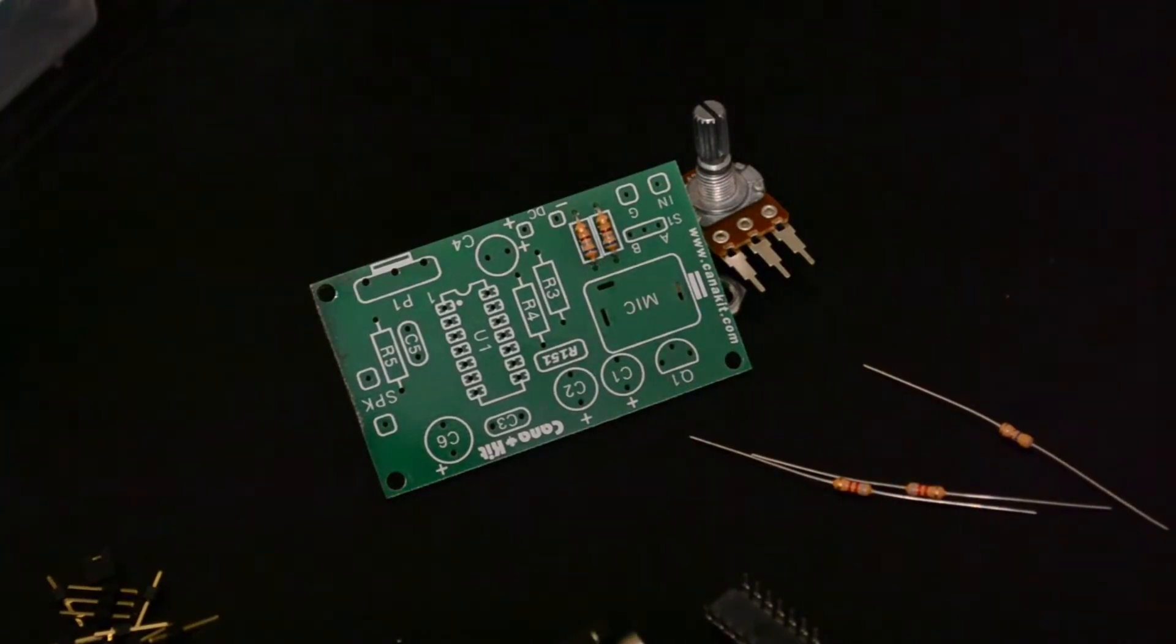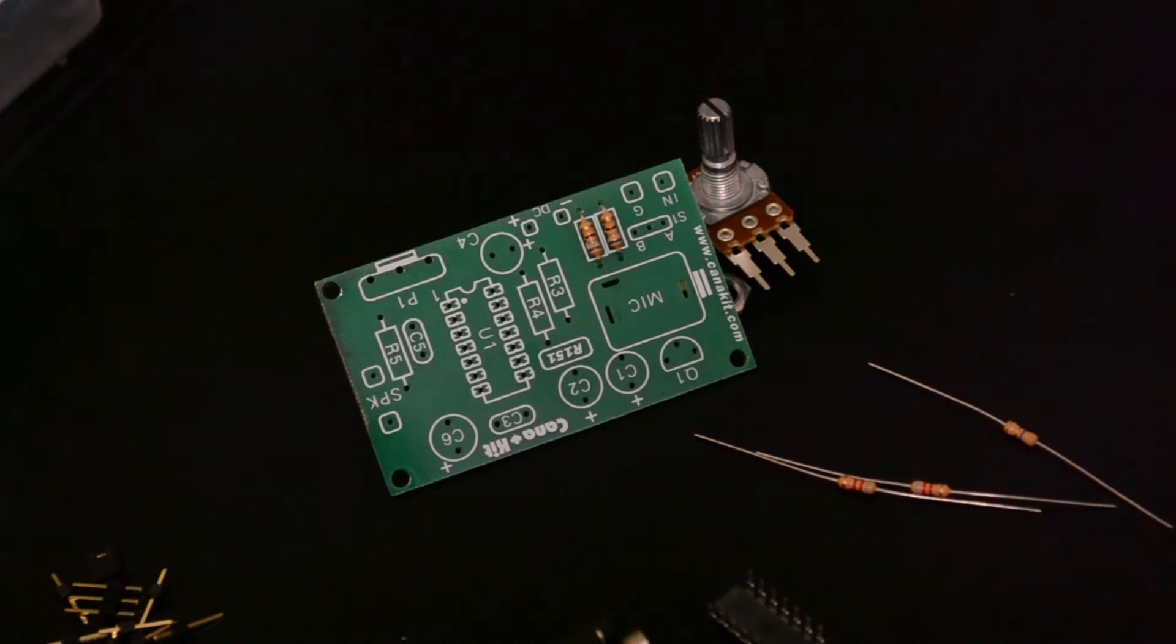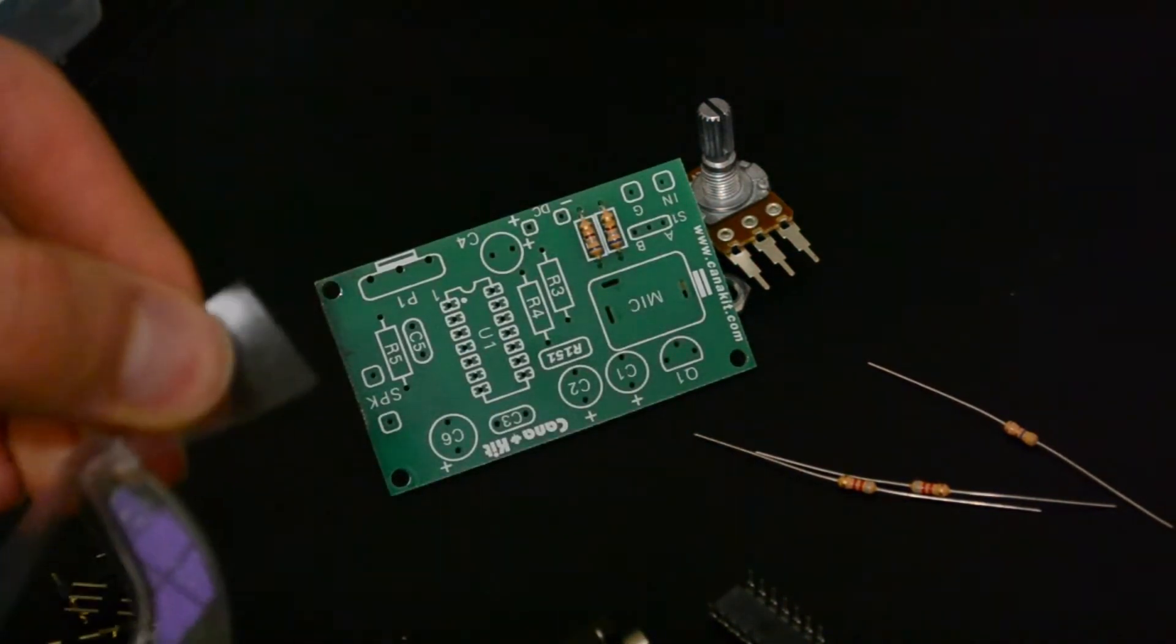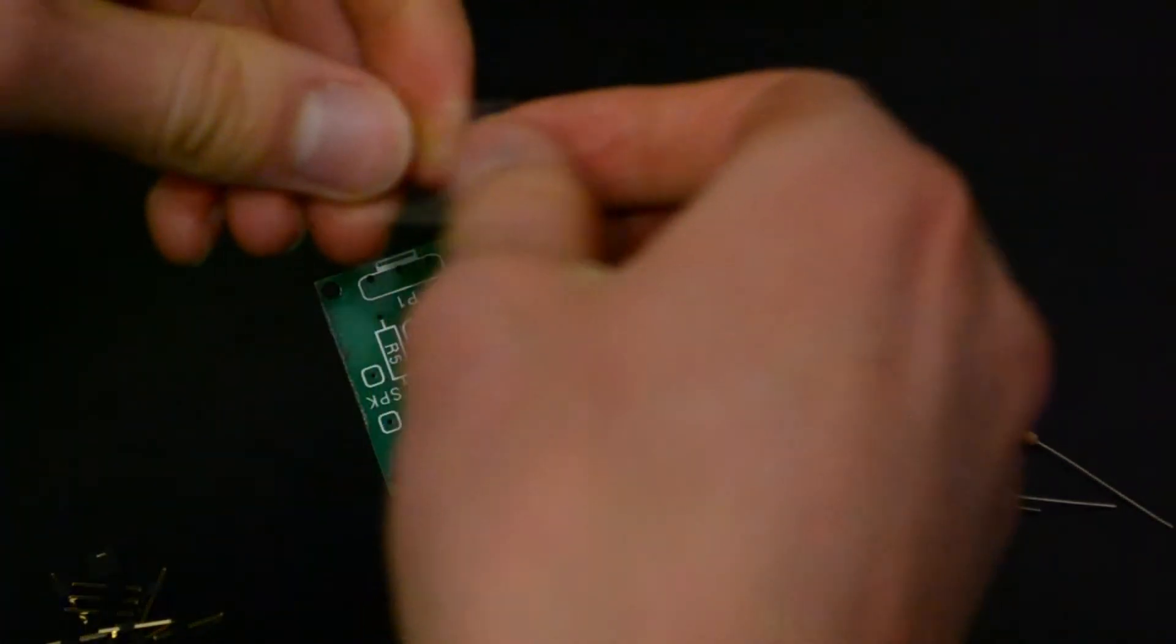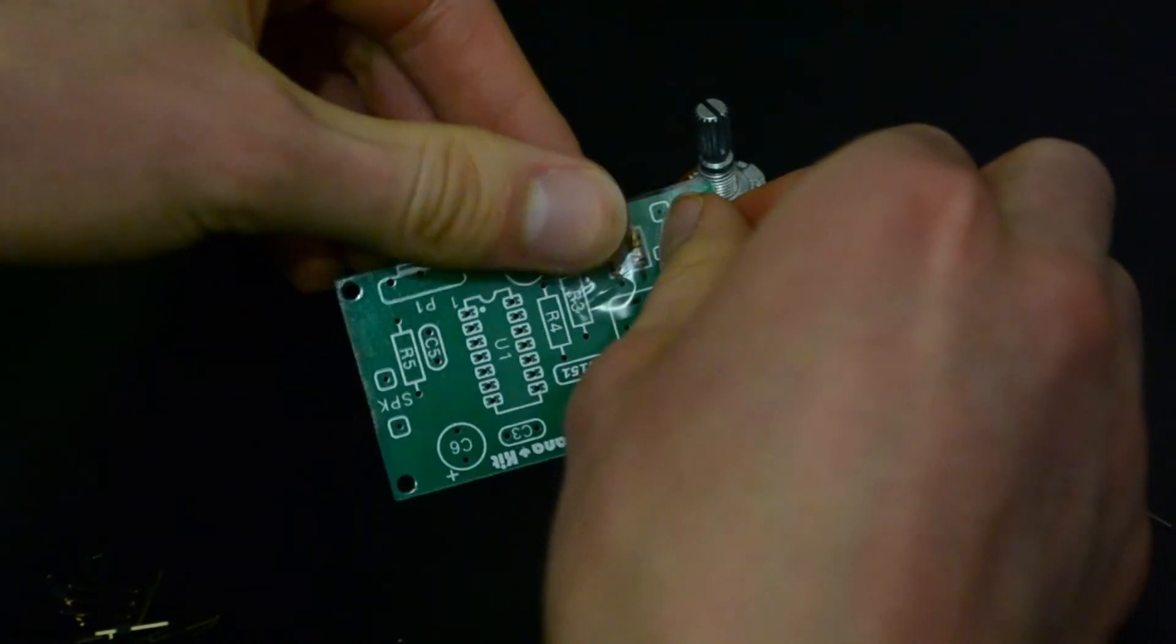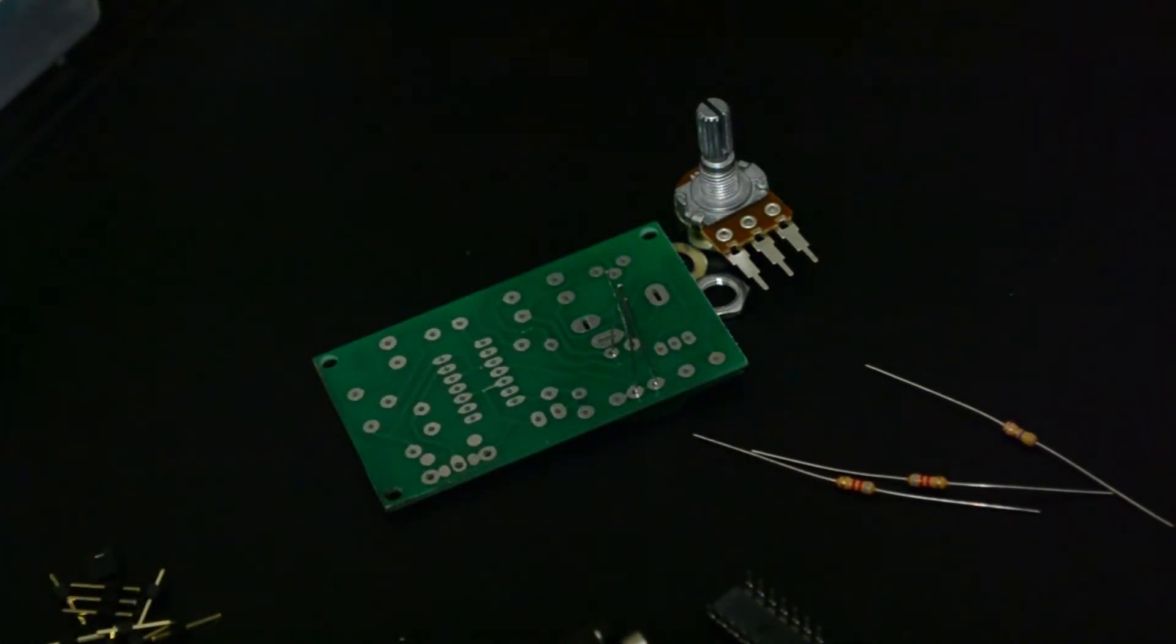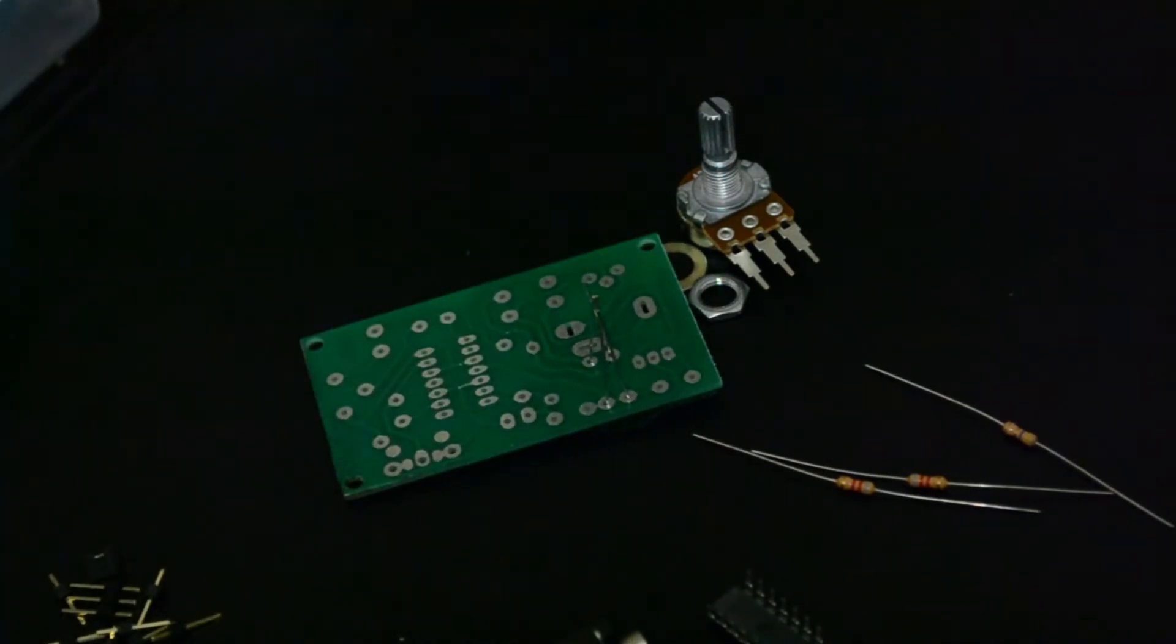Here's a nifty little trick I like to use when I'm putting components on a board like this. We need to flip it over to solder it. We don't want them falling out. So, what I do is take a little piece of scotch tape and tape them down on top of the board. Now, when I flip it over, the components stay put. And it's way easier to solder them.